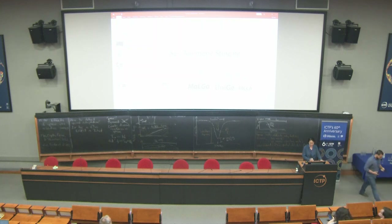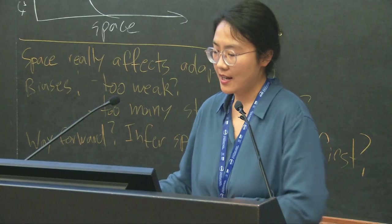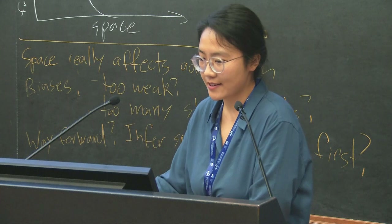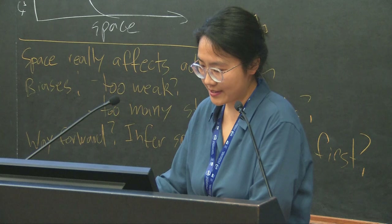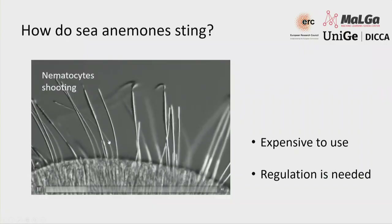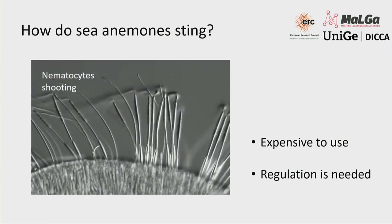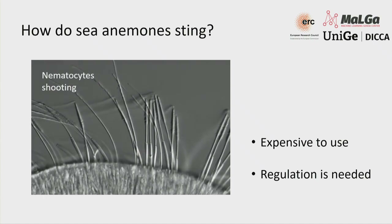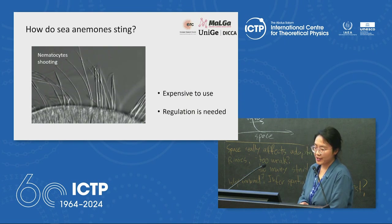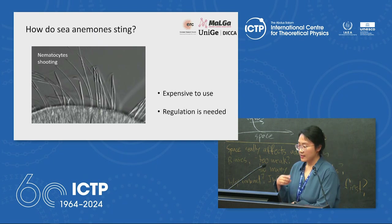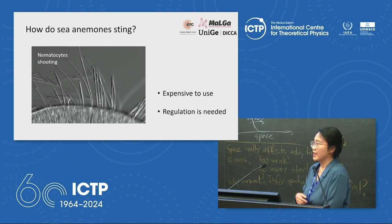I'll talk about sea anemone stinging. They have specialized cells called nematocytes that can shoot out harpoon-like structures and inject poison into predators or prey. These cells are very expensive — they are single-use, so once triggered they have to be disposed of and replenished. The number of cells triggered every time has to be strictly regulated. We used optimal control theory to predict optimal shooting as a function of the animal's starvation state.